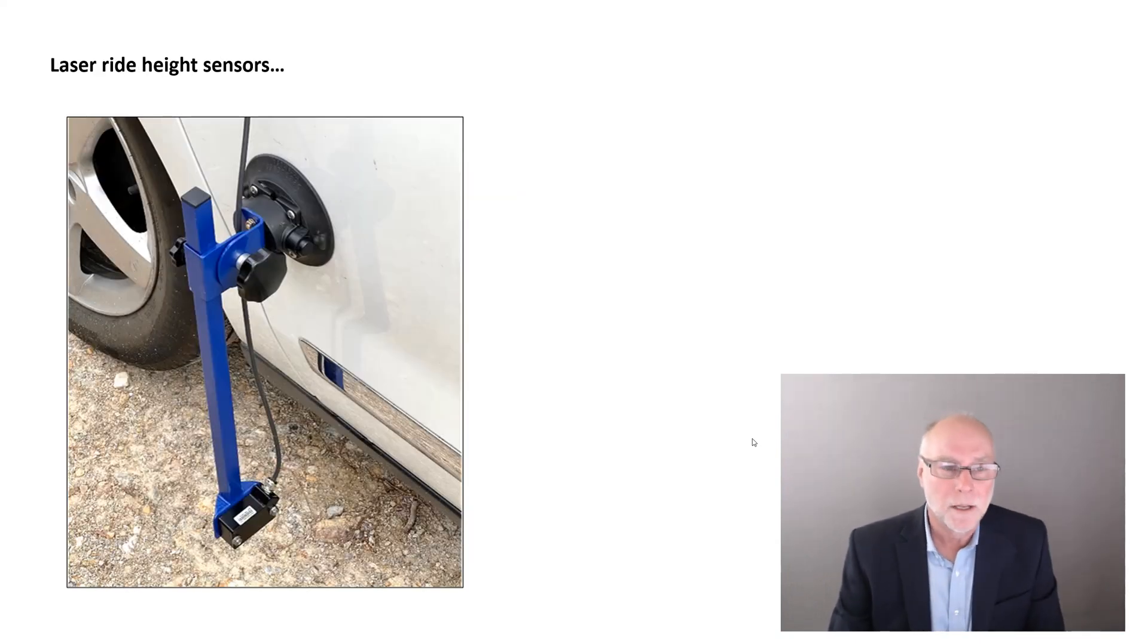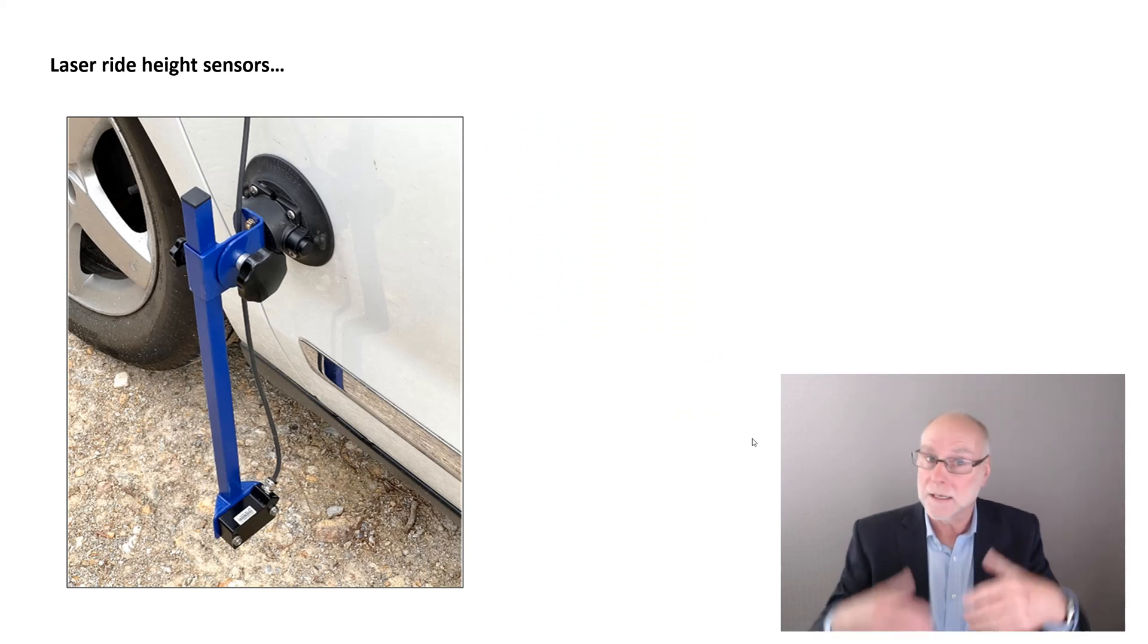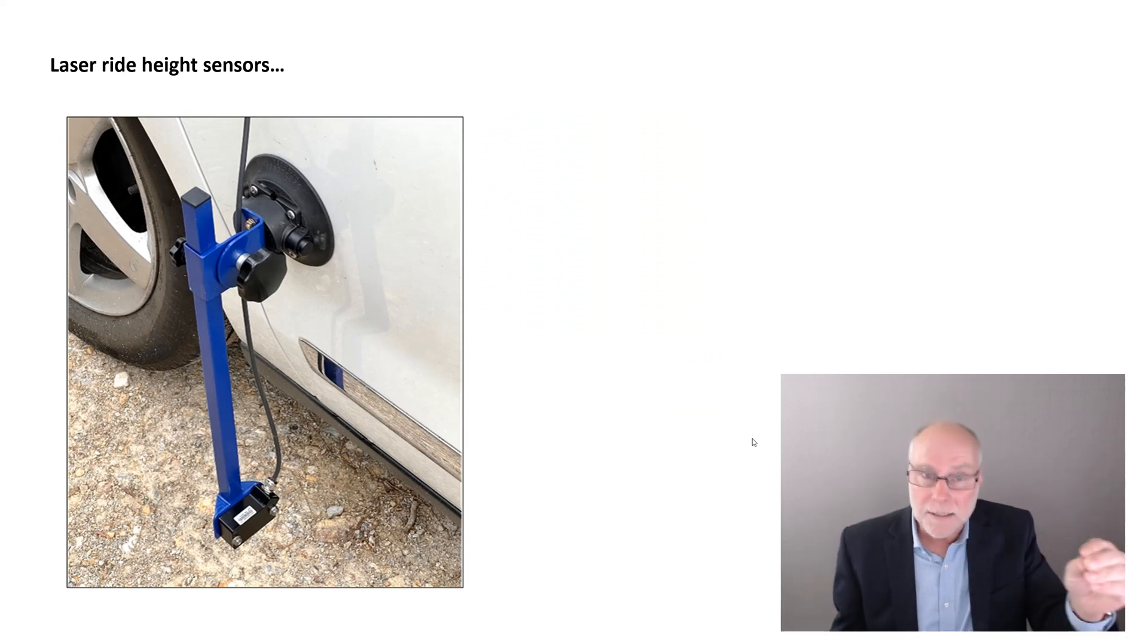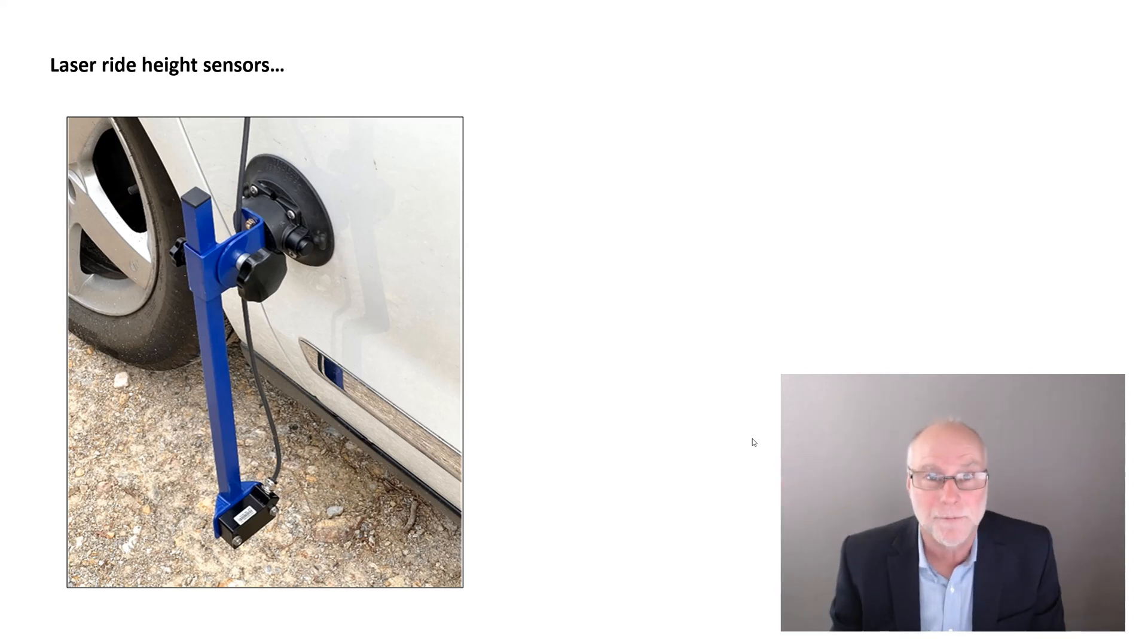The second technique we covered was to, again, measure ride height, but this time to use a laser sensor attached to the car's bodywork, pointing down to the ground. The idea is much the same as with suspension ride height sensors. If your car is developing lift, as you go faster, the ride height will increase. In this case, the laser sensor will get further from the ground. There is a problem there, though, and that is the tires get bigger. They grow in diameter as you go faster. So you've got more than one thing happening at once.